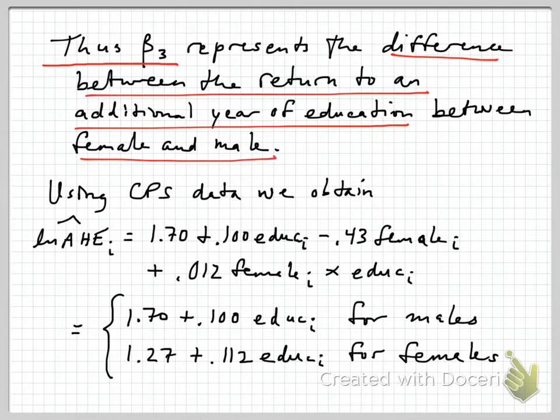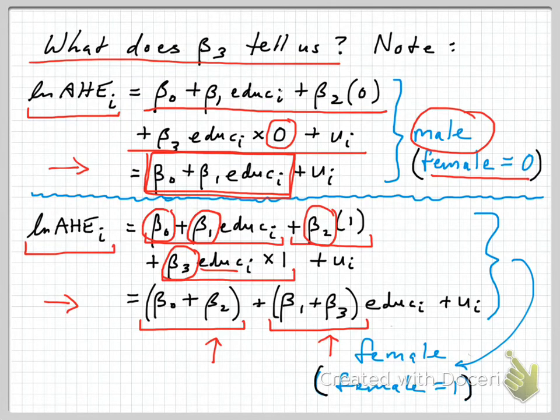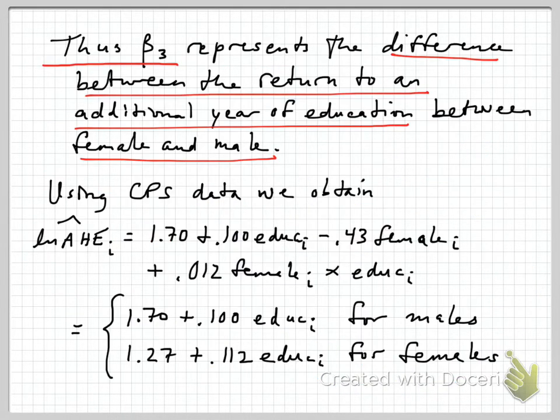It's a common mistake that students make when they first learn this, that they tend to think of beta 3 as the return to a year of education for a female, and that's not the case. Actually, it's beta 1 plus beta 3 that is the overall return to a year of schooling for females, and beta 3 just represents the gender differential in that return.